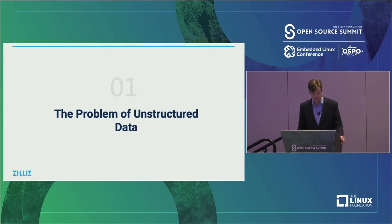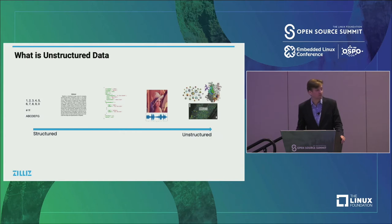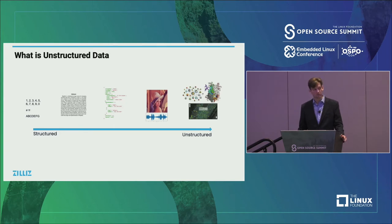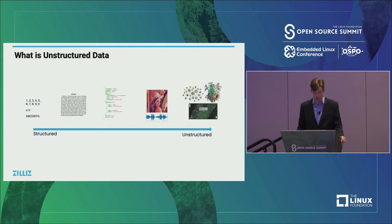Let's go over the problem of unstructured data and why we need Milvus. There are three types of data: unstructured, structured, and semi-structured. With structured data, the data has a defined pattern and solid structure and can fit in tabular places — think of something you'd write into Excel, like strings, numbers, and dates — things that can easily be compared to each other.